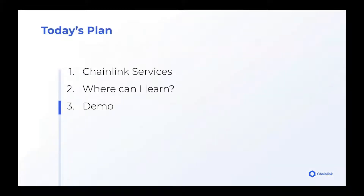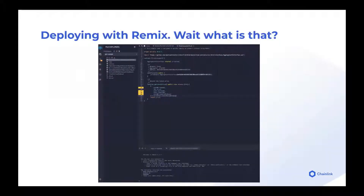With that, I'm going to go ahead and go into the demo. We're going to start the demo by deploying some Chainlink smart contracts with Remix. If you don't know what Remix is, it's a popular web-based IDE — integrated developer environment — for making and deploying smart contracts. Basically you can think of it as a website that just has a lot of nifty tools for making smart contracts. And this is where we're going to start today.